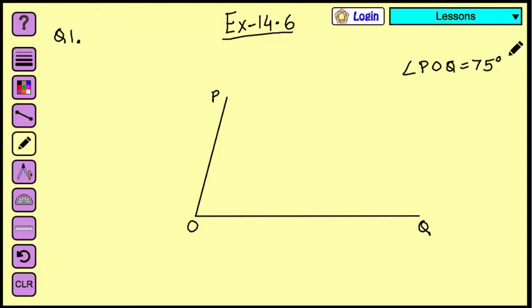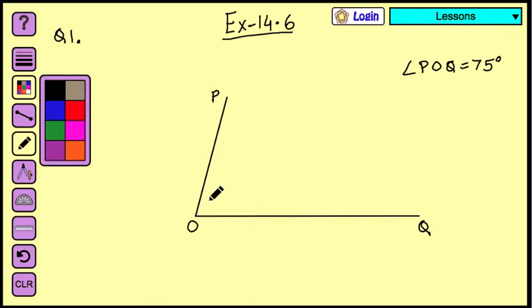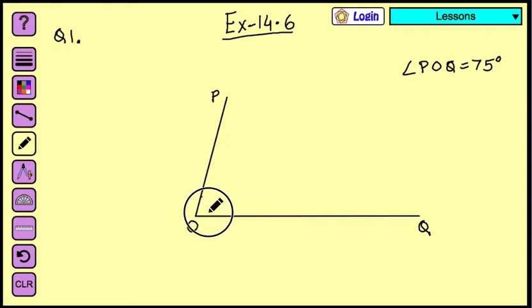We can mark it also. So this is your 75 degrees. Now we have to draw a line of symmetry. That line of symmetry means the line will pass from the center of this angle, that means a bisector.